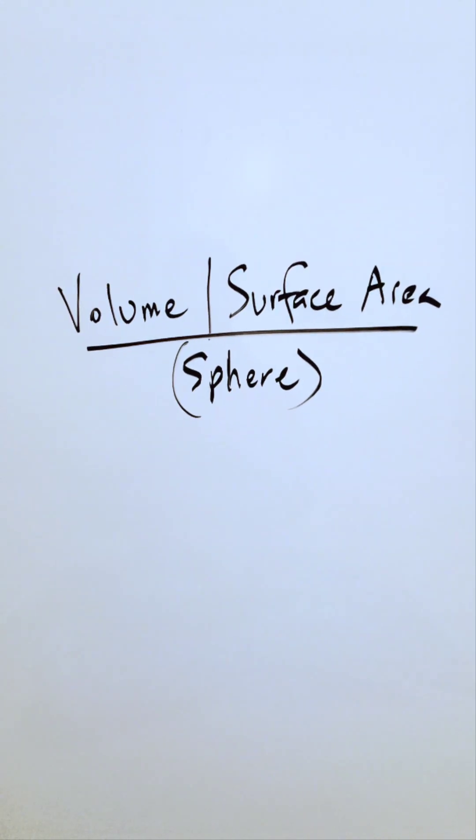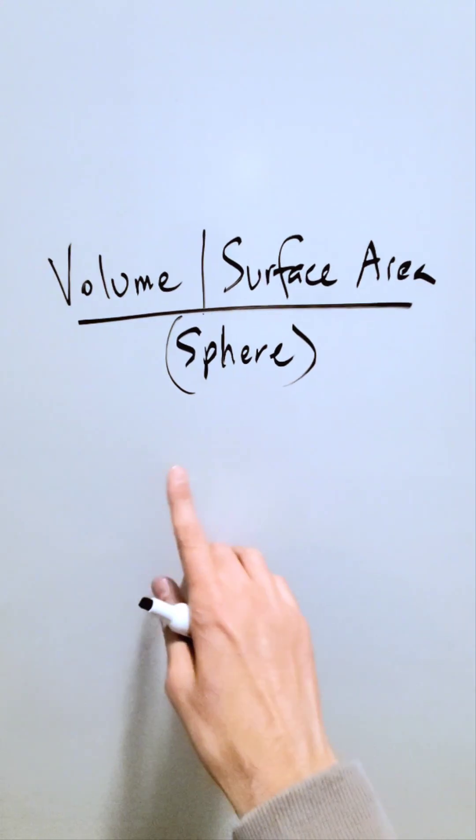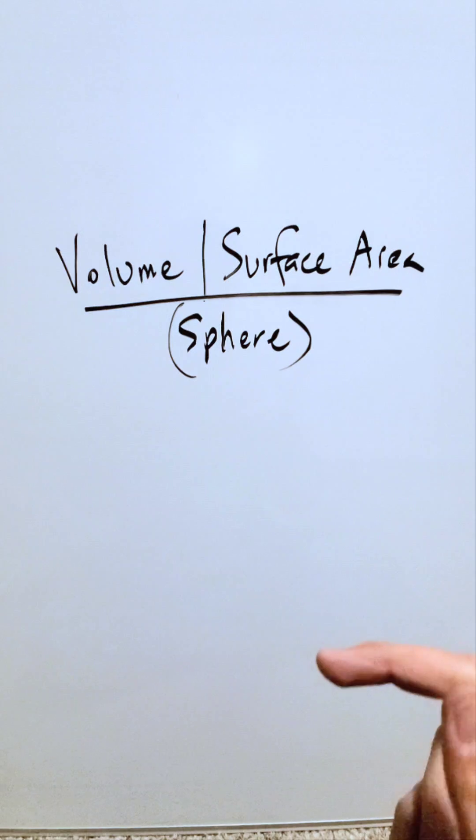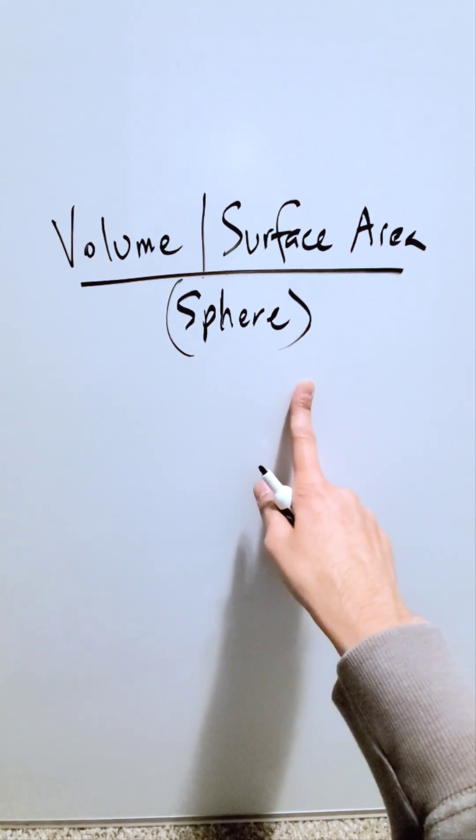When you're thinking about a sphere, let's identify a unique relationship between the volume and the surface area of that sphere, a three-dimensional solid.